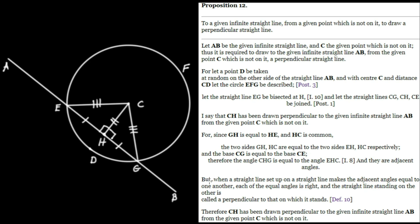As he says, but when a straight line is set up on a straight line and makes the adjacent angles equal to one another, each of the equal angles is right. And the straight line standing on the other is called a perpendicular to that on which it stands. So we have our two right angles here, and the straight line is by definition a perpendicular line. Therefore, CH has been drawn perpendicular to the given infinite straight line AB from the given point C, which is indeed not on it.